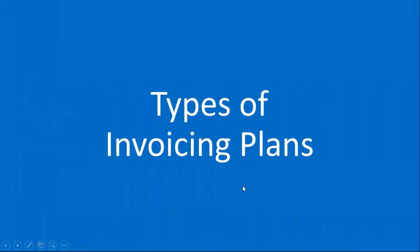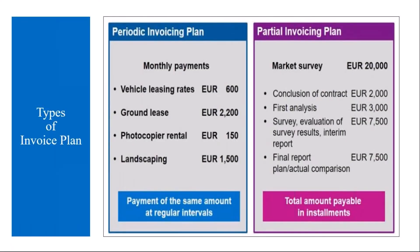Now we will see the types of invoicing plans. There are basically two types: one is the periodic invoicing plan, and the next one is the partial invoicing plan. We will understand both of them in detail and then create them in the system.